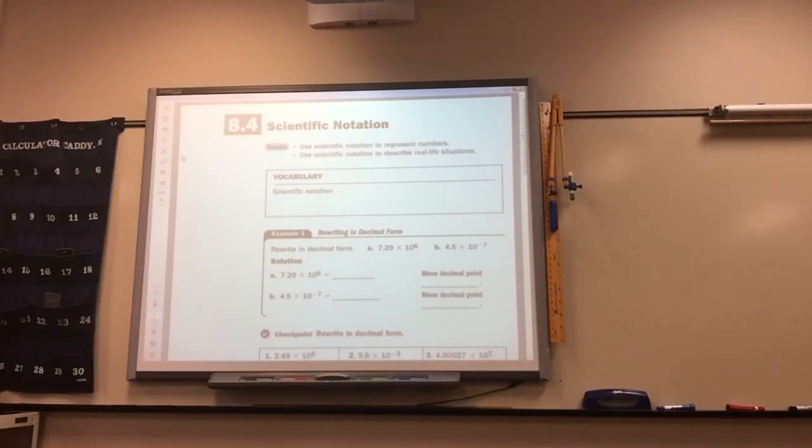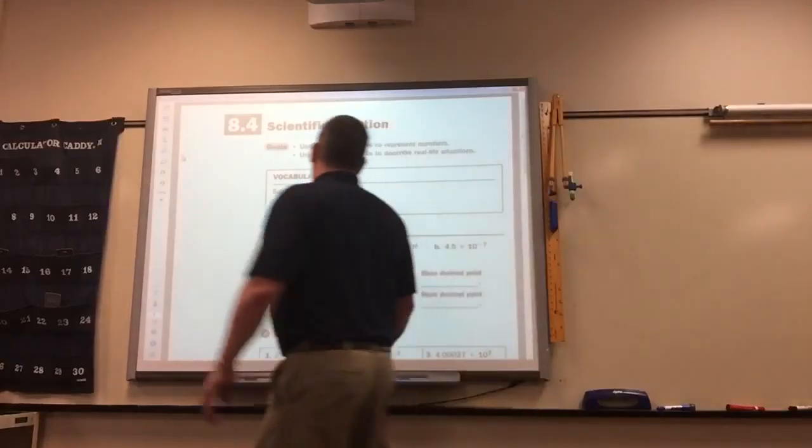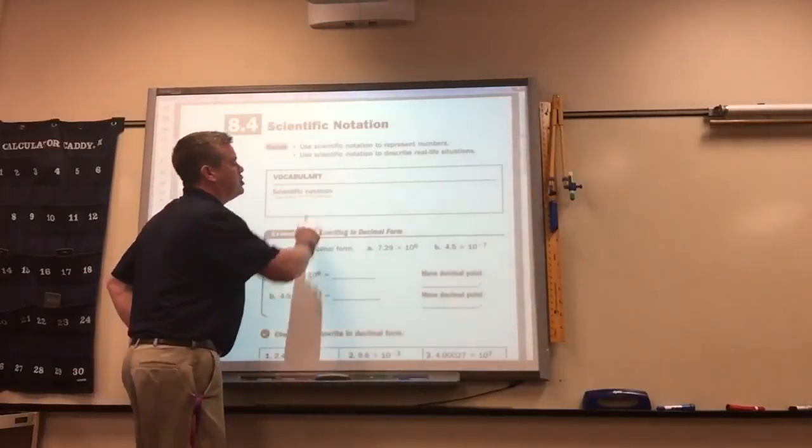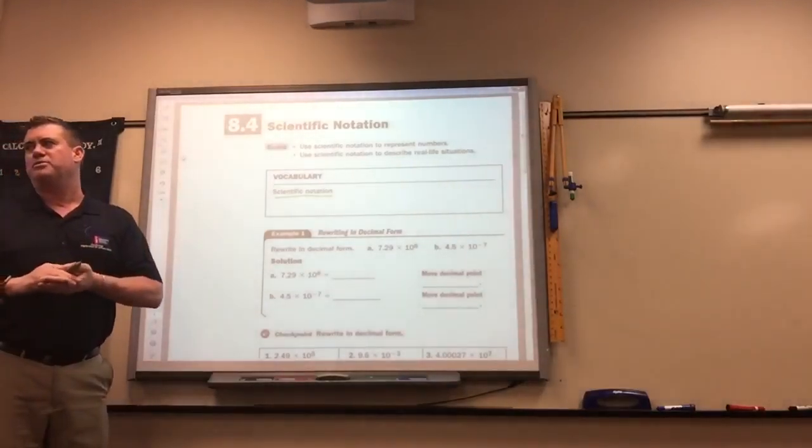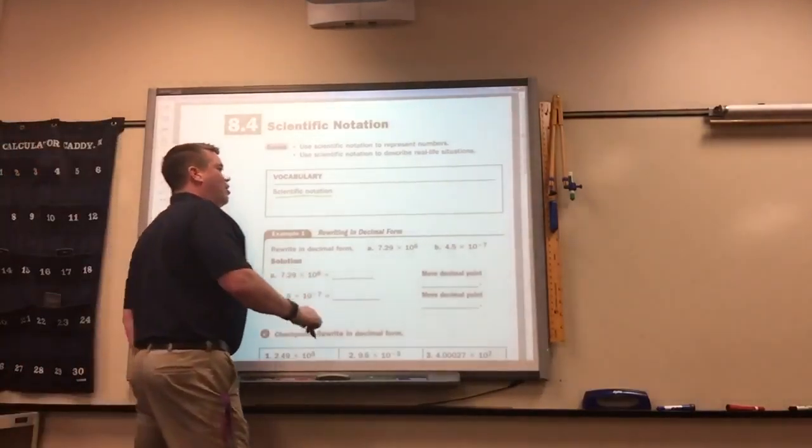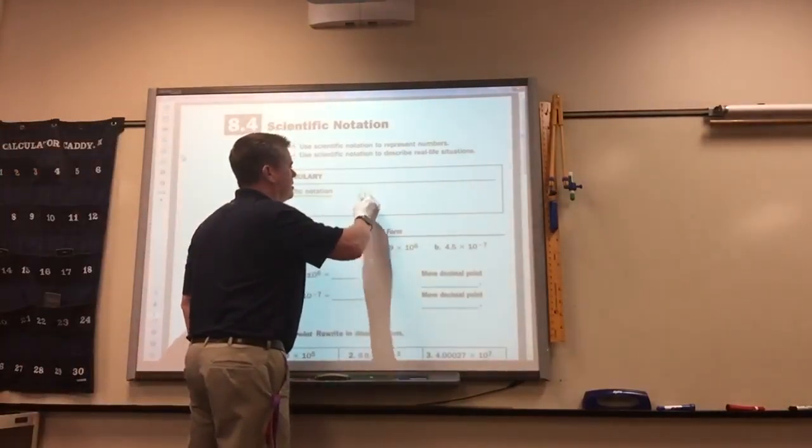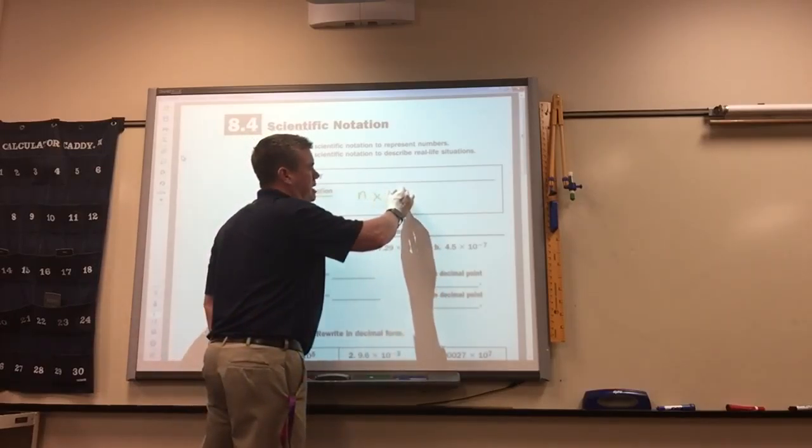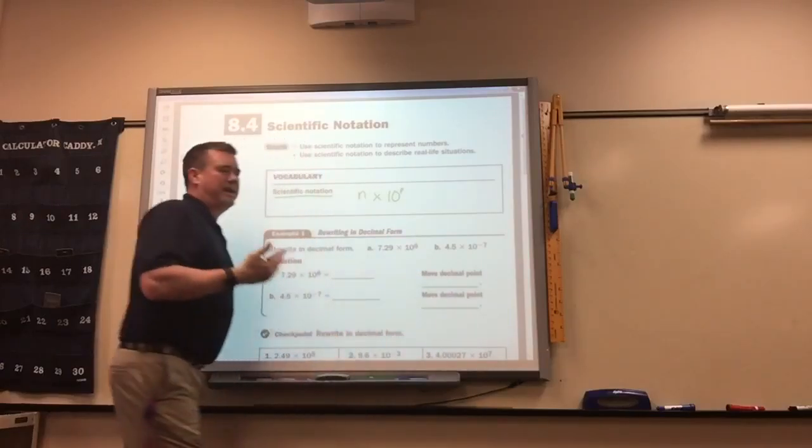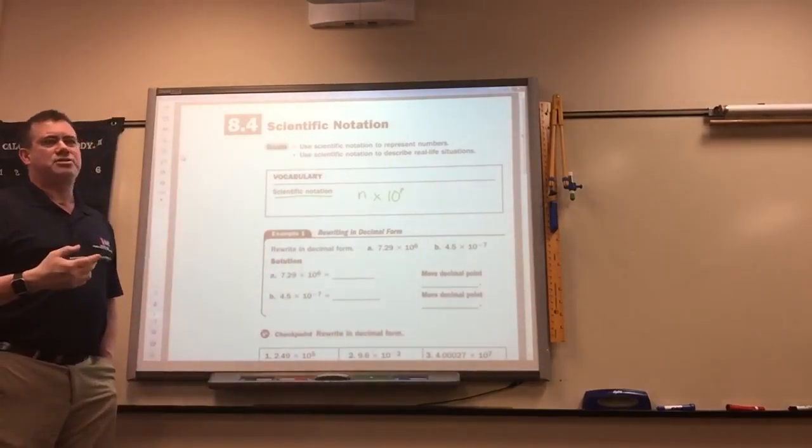You did do a little bit of it last year in eighth grade but not a lot. But scientific notation is used to write either great big numbers or small numbers. It's always some number times 10 raised to a power. That's the form of scientific notation.